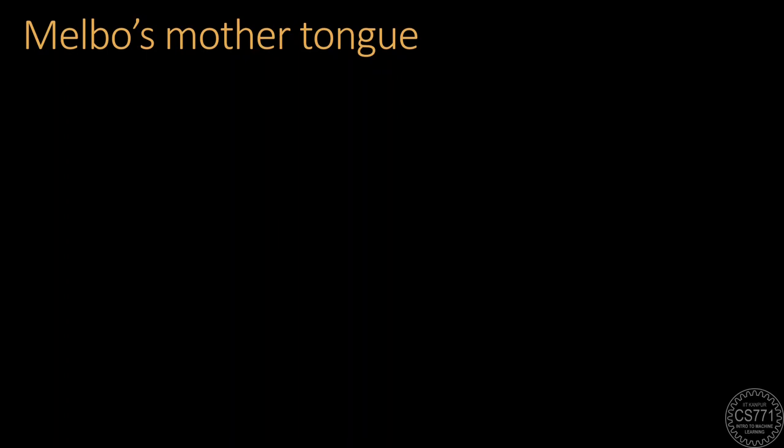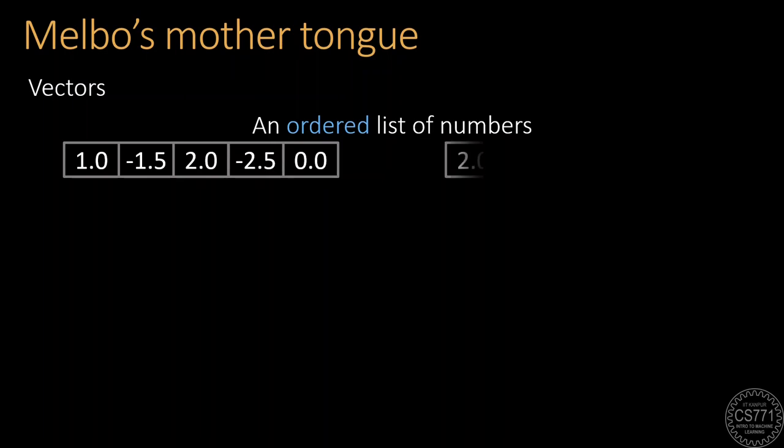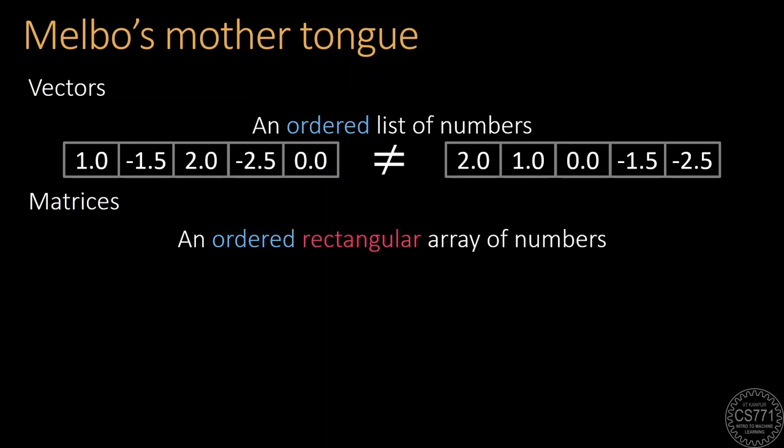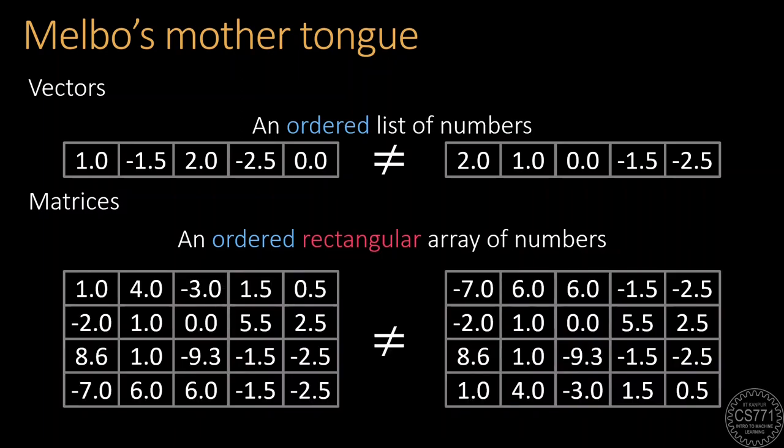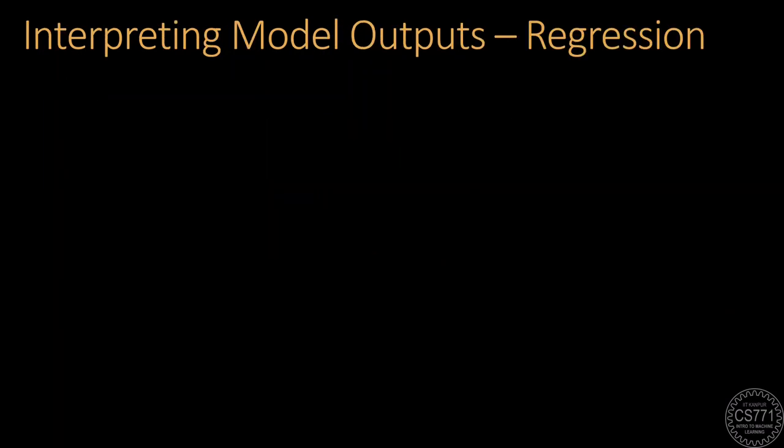The answer to the question, what is a vector, depends on who we are standing in front of. Are we standing in front of a physicist or a mathematician? However, for machine learning purposes, a vector is simply an ordered set of numbers. These numbers could be negative, positive, integers, fractions or even zero. Note that the ordering is super important here. Two lists of numbers which have the same set of numbers, but which are ordered differently would be considered two completely different vectors. Similarly, ordered rectangular arrays of numbers are often called matrices. We will revisit more interesting properties of vectors and matrices later. But for now, we start with how to interpret the outputs of a machine learning model.